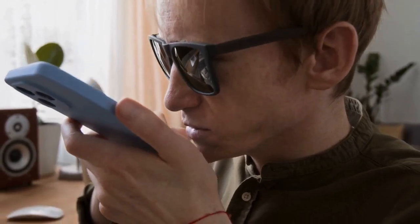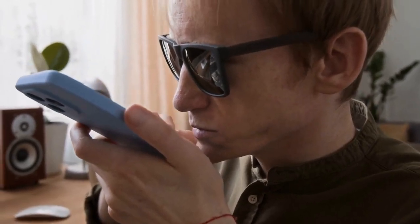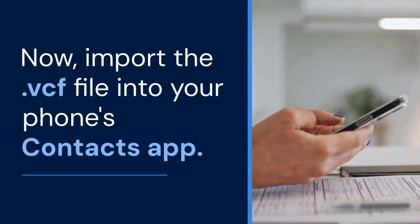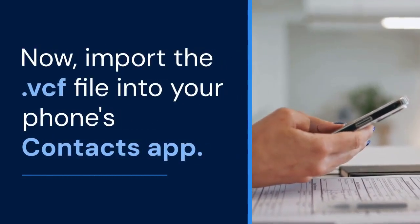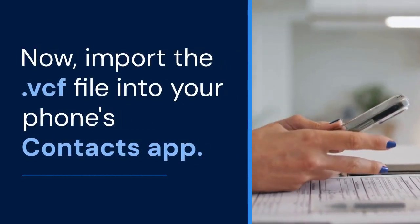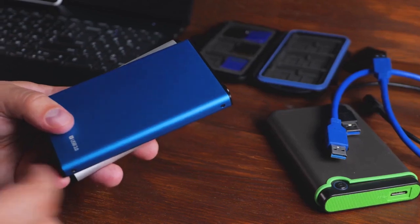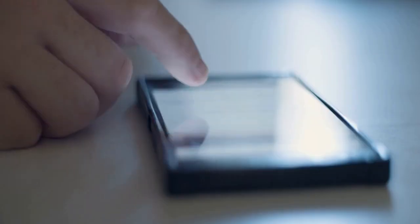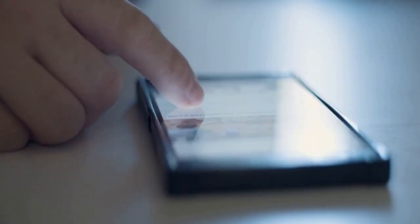Save the .vcf file to your phone's storage. Now, import the .vcf file into your phone's contacts app. Open your contacts app. Look for the import option in the settings — it might be labeled 'import from file' or similar.